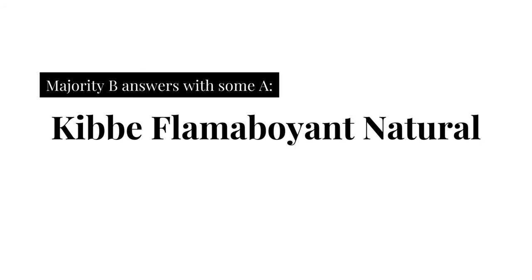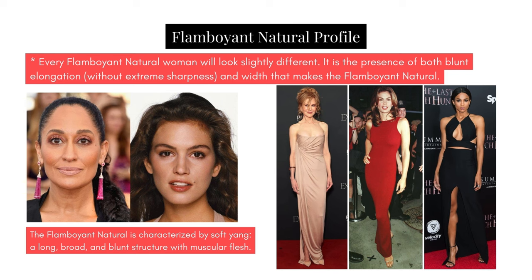If you had mostly B answers with some A, then you are a Kibbe Flamboyant Natural. It is the presence of both blunt elongation — they have length and a long vertical line — but without the sharpness of a Dramatic, so they also have width and their edges are blunt, not sharp. The Flamboyant Natural is characterized by soft yang: long, broad, and blunt structure with often muscular flesh. Kibbe has famously noted that most of the supermodels of the 90s were Flamboyant Naturals.